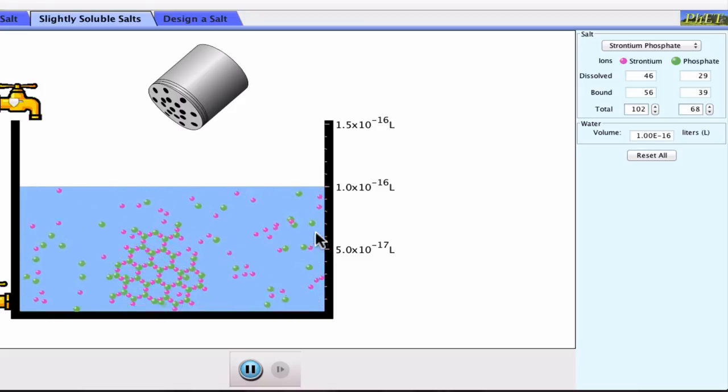We'd like to be able to characterize quantitatively how many ions we find in solution, given, for example, an initial amount of solid that we'd want to dissolve in some volume of water. This should sound a lot like an initial to equilibrium type of problem, and that's exactly what it is. We're interested in calculating the equilibrium concentrations of dissolved solute particles given initial conditions.